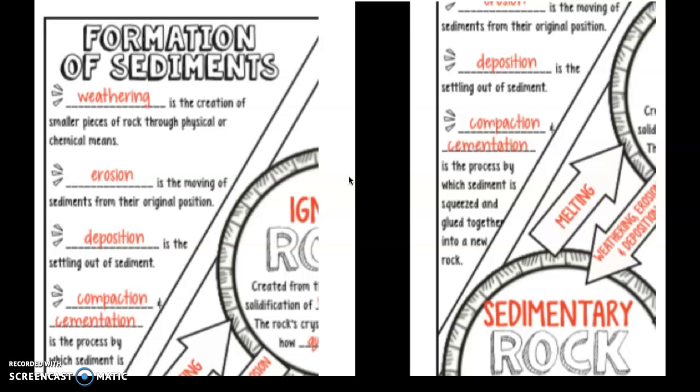Before we can become a sedimentary rock, we've got to be sediments first. So we need to undergo weathering, which is the creation of smaller pieces of rock through physical or chemical means — we're going to study that in two days. Then I need erosion, which is the moving of sediments from one place to another. Erosion typically happens with wind, water, or ice. Then I need to deposit them, which is where the sediments stop moving and drop. Then our rocks need to undergo compaction and cementation, where the sediments are squeezed and pretty much glued together to form our new sedimentary rock. They're not sedimentary rock until they've undergone compaction and cementation.